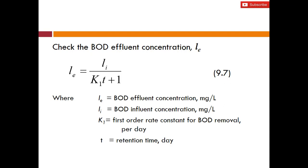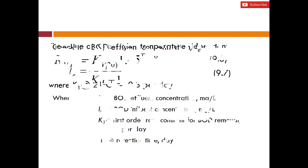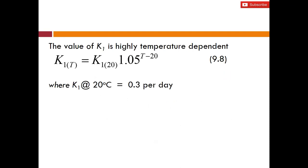We also need to check whether the BOD in the effluent meets requirements, using this equation: Le (BOD in effluent) equals Li (BOD in influent) over (k1 × t + 1), where k1 is the rate constant for BOD removal per day — don't mix up k1 and kT. We also need to adjust the value of k1 if temperature differs, just as we adjust kT.